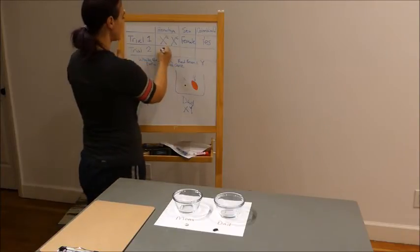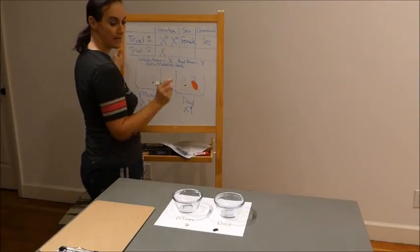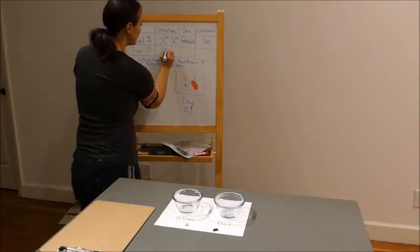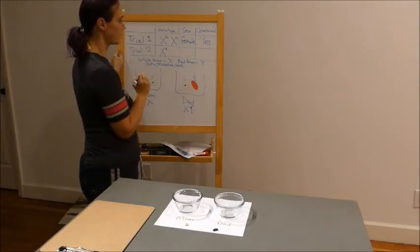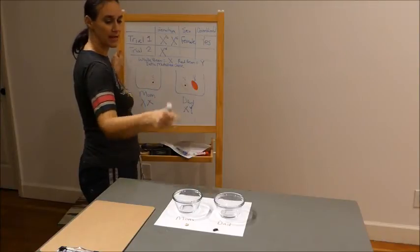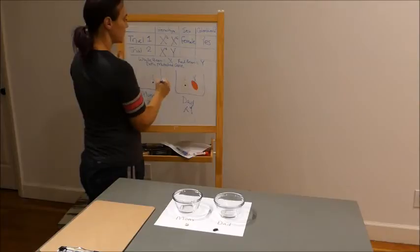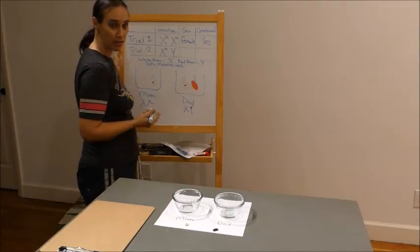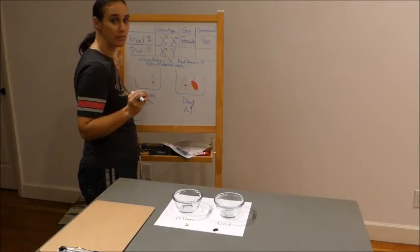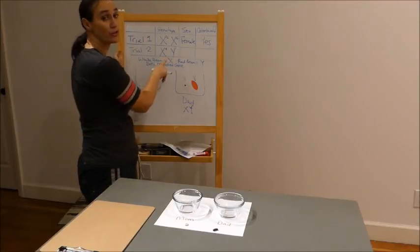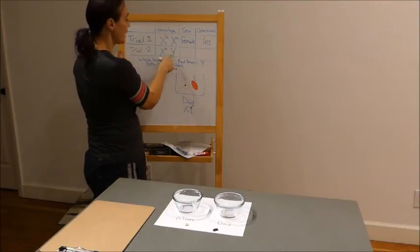The white bean with a dot. White bean is an X. It has a dot, so it has a mutated gene. So it's going to have little c, right? Now then I have a red bean from the dad. Red bean is a Y. Does it have a C associated with it? Absolutely not, because remember, the genes for colorblindness are only found on the X chromosome. They're not found on the Y.